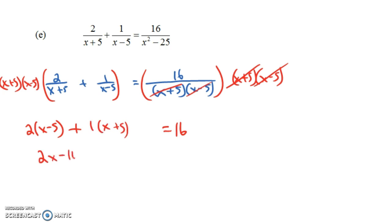So what we have is 2x minus 10, if you distribute the 2, plus x plus 5 equals 16. Combine our like terms. We have 3x, and then minus 10 and plus 5 would be minus 5 equals 16. Add 5 to both sides, we get 3x is equal to 21, and so x is equal to 7.